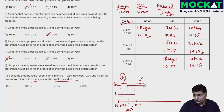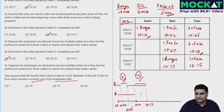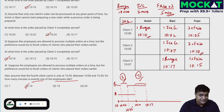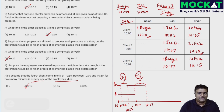From 10:10 to 10:17 when Bani completes the burger — that's 7 minutes. Adding the two stretches: 3 + 7 = 10 minutes. So for exactly 10 minutes, exactly one of the employees is idle. This is a short and easy case — one you should not miss in the exam.